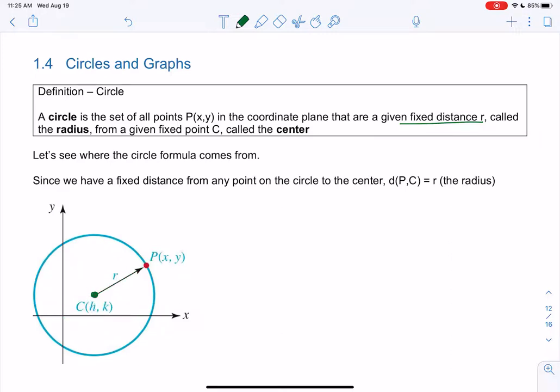So using that definition, let's find the formula. So we have a fixed distance. So the distance from the center, I'm gonna call it h,k, to any point, whether it's this point, or this point, or this point, the distance is r. R is the fixed distance. So we're gonna use the distance formula. I'm gonna jump into d squared. I'm gonna use the squared version of it. And we're gonna do x2 minus x1 squared plus y2 minus y1 squared. I'm deriving it from the distance formula.